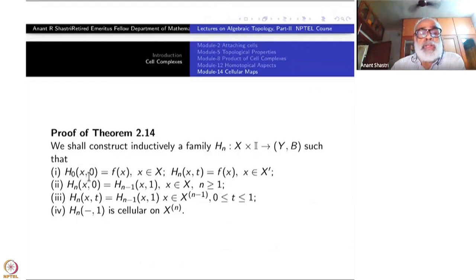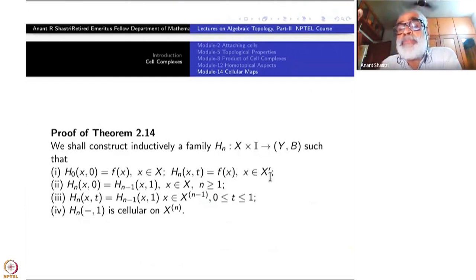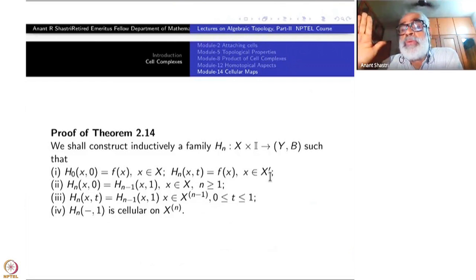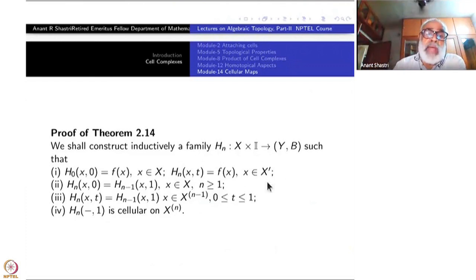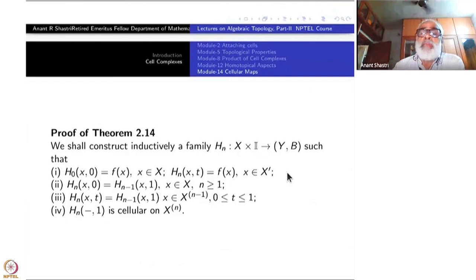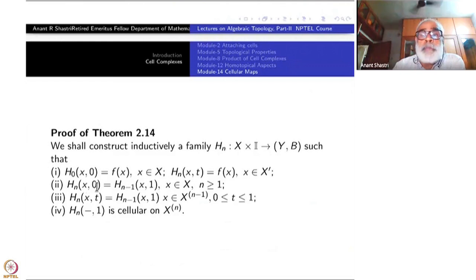Let us complete the proof of the theorem inductively. We shall construct a family H_n : X × I → Y such that: H_0(x, 0) = f(x); each H_n(x, t) = f(x) for x in X′ (the subcomplex on which f is already cellular) — we do not disturb that part at all; and we change the map by homotopy only on cells not in X′.